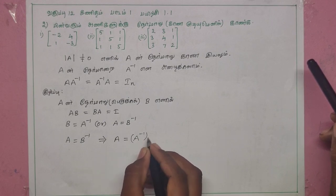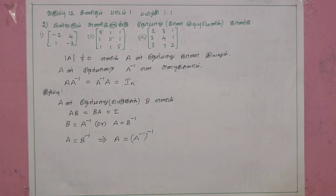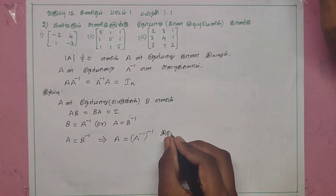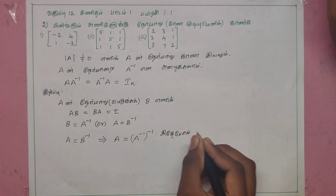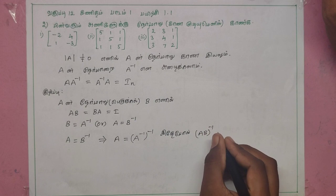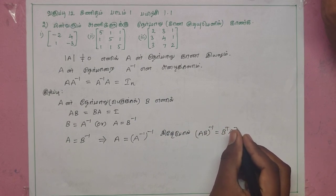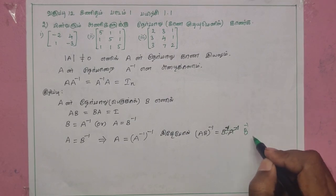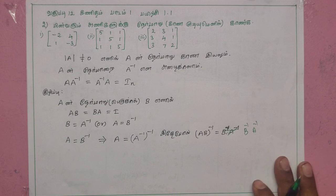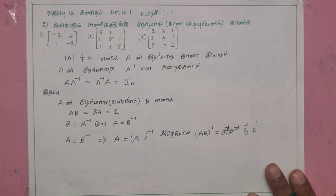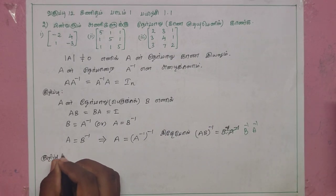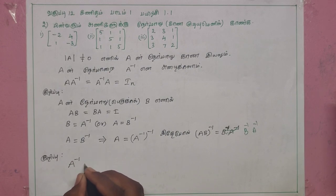B inverse A inverse — the whole inverse equals A inverse of inverse, equal to A. This is a formula: AB whole inverse equals B inverse into A inverse. This is called the reversal law of inverse: B inverse into A inverse.